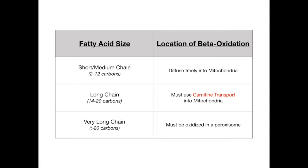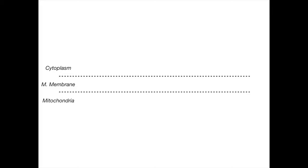In discussing carnitine transport: the top of the diagram is the cytoplasm, between the two dotted lines is the mitochondrial membrane, and below is the mitochondria. You start with a fatty acid, which gets converted into fatty acyl-CoA by the enzyme fatty acyl-CoA synthetase — the name tells you the product. Fatty acyl-CoA can then diffuse into the mitochondrial membrane; note that fatty acids themselves cannot.